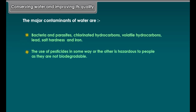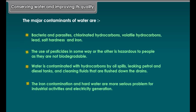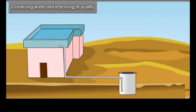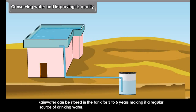Conserving water and improving its quality. The major contaminants of water are bacteria and parasites, chlorinated hydrocarbons, volatile hydrocarbons, lead, salt hardness and iron. The use of pesticides is hazardous to people as they are not biodegradable. Water is contaminated with hydrocarbons by oil spills, leaking petrol and diesel tanks and cleaning fluids that are flushed down the drains. Iron contamination and hard water are more serious problems for industrial activities and electricity generation. Besides these problems, there are certain methods to conserve water.